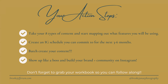Your action steps: take your eight types of content and start mapping out what features you're going to use, and create an Instagram schedule you can commit to for the next three to six months. I want you to create a schedule you can follow until the end of 2021 — what are you going to do for October, November, and December? That is 90 solid days, and 90 days is typically what it takes statistically to gain momentum so you can write into the new year.